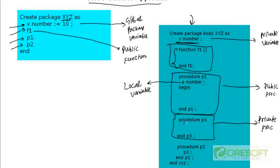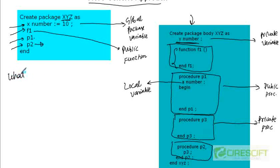Since I declared procedure p2 in the package specification, I must provide its implementation in the package body. Inside procedure p2, I am calling p3, which is allowed because p3 is a private procedure inside the package body XYZ, and procedure p2 is also part of that package body. Therefore p3 can be called within procedure p2.